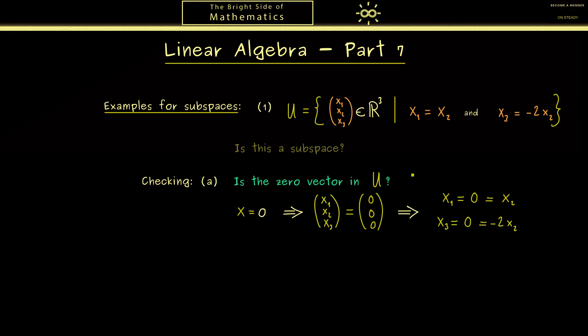Therefore the zero vector is in U. So this is the important conclusion here. The first condition is checked. And of course this is always the simplest one to check, and that's the reason we start with it. Now the second one is about the scalar multiplication.